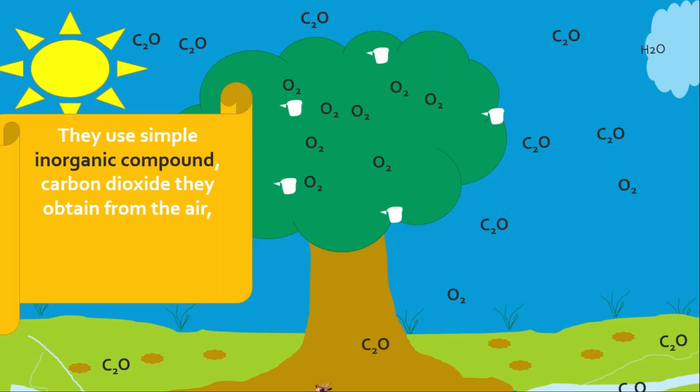Autotrophs use simple inorganic compounds: carbon dioxide they obtain from the air, water, and mineral salts they obtain from the soil to make food. Please observe the flow of these substances.